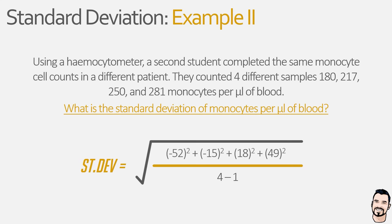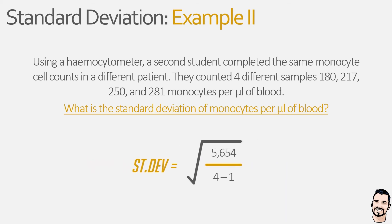We can then simplify this further by squaring each of our values in the brackets, and as we talked about earlier, the squaring of values removes any negative values from our equation. Now we can add up each of the numbers on the top line of the equation, giving us a value of 5,654. Next, we need to simplify the bottom line of the equation, so 4 minus 1 is 3, allowing us to divide 5,654 by 3, giving us 1,884.7.